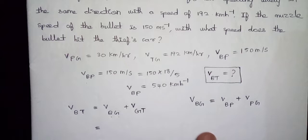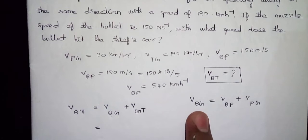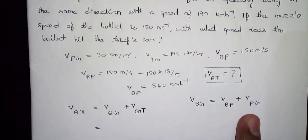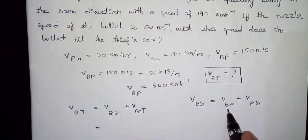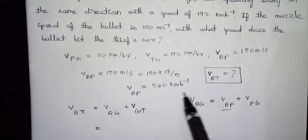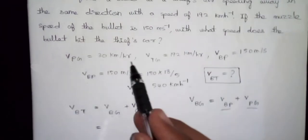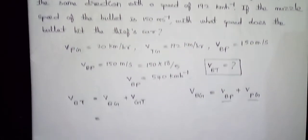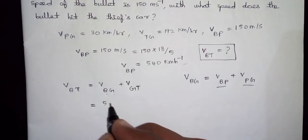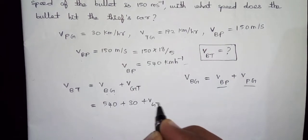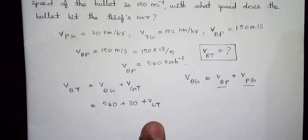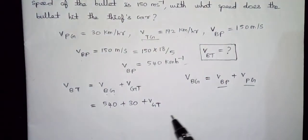We get V of BG from V of BP plus V of PG. V of BP is 540 km per hour and V of PG is 30 km per hour. So V of BG equals 540 plus 30. Note that V of GT is not the same as V of TG.